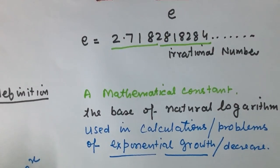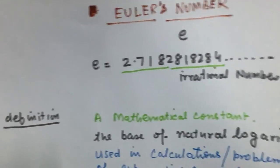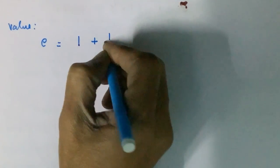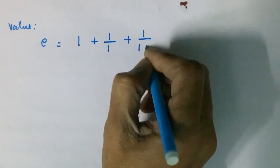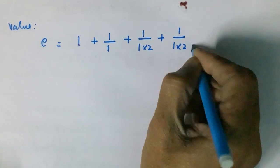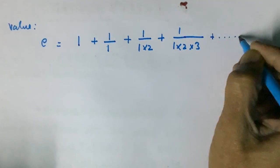Now we come on to how we have calculated its value. E is equal to 1 plus 1 by 1 plus 1 by 1 into 2 plus 1 by 1 into 2 into 3, and so on.